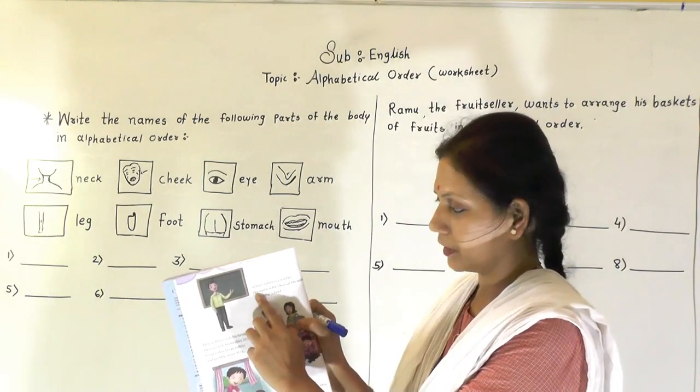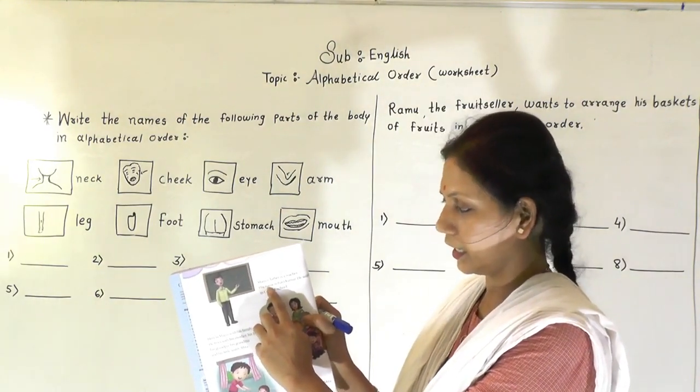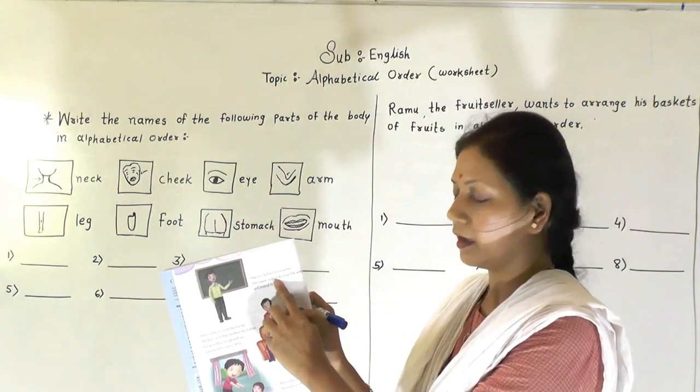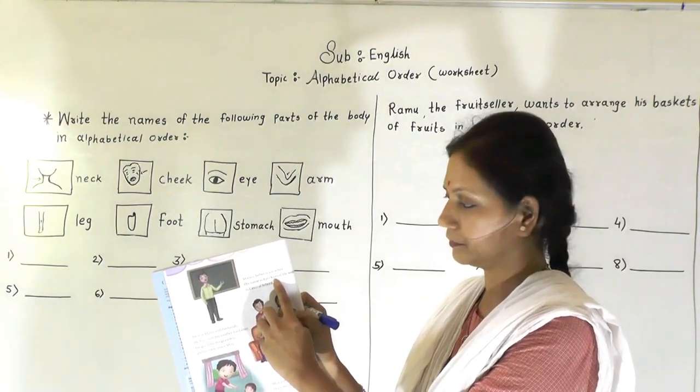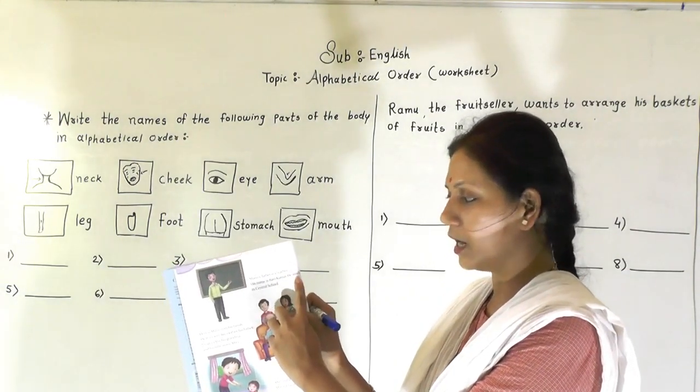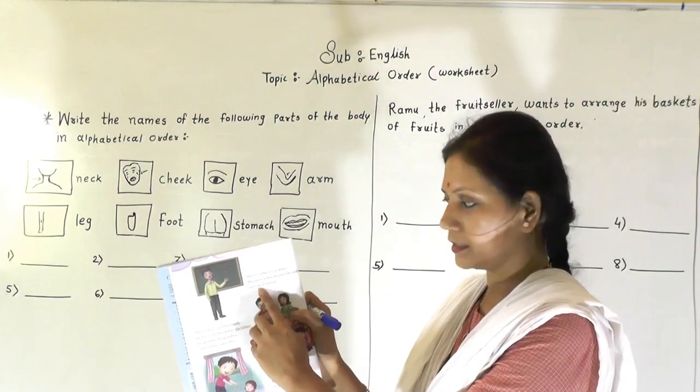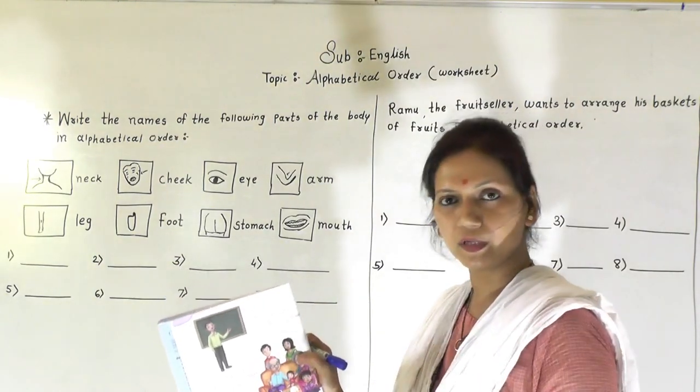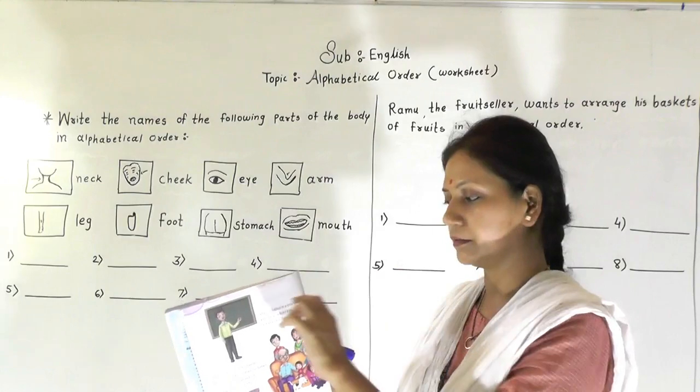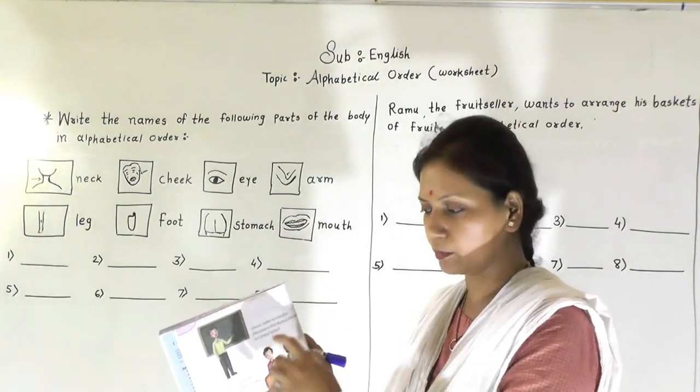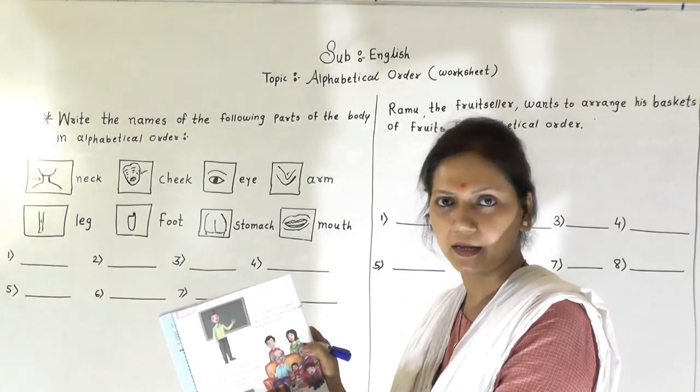Repeat after me. His name is Ravi Kumar. He works in Central School. So today this much para is enough. Tomorrow we will continue with the third para. Okay. So let's move towards the worksheet.